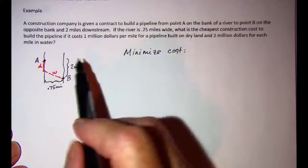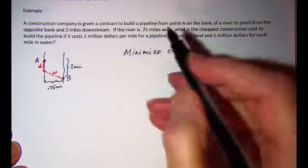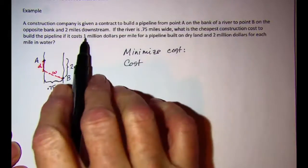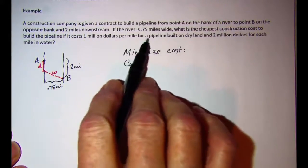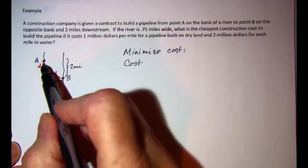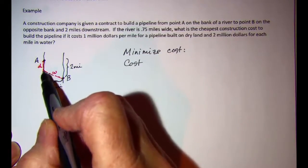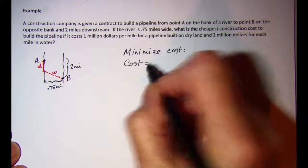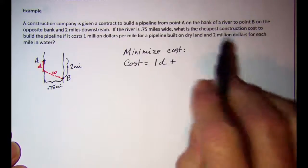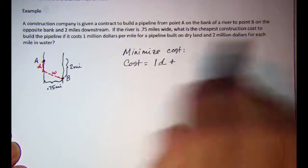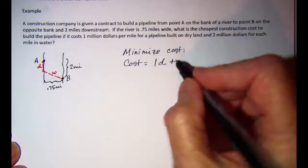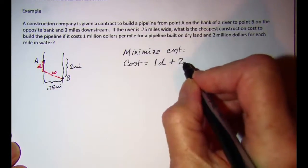Our cost function is going to be $1,000,000 per mile for the pipeline built on dry land, so 1 times D, plus $2,000,000 for each mile in the water, so 2 times W. That gives us: Cost = 1·D + 2·W.